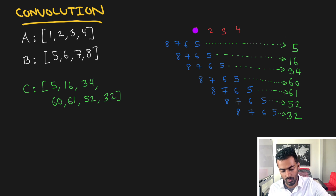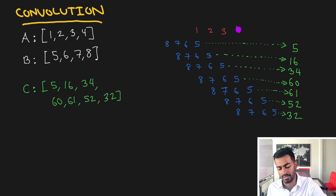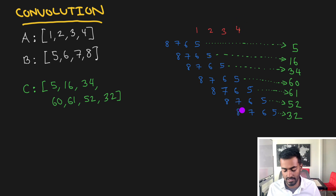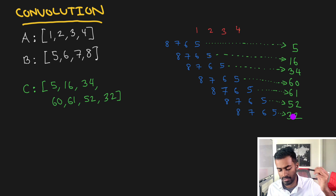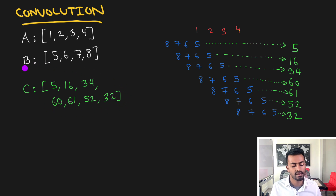So in this case we have 6 times 1 plus 5 times 2, that's going to be 16; 7 times 1 plus 6 times 2 plus 5 times 3, that's 34. And we slide this until the last element of the first function aligns with the last element of the second function — in this case that's 4 times 8, which will be 32. So the output here is going to be a list of seven elements.